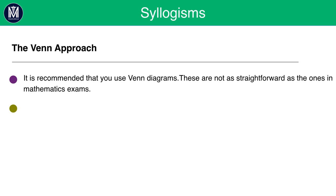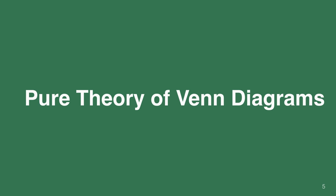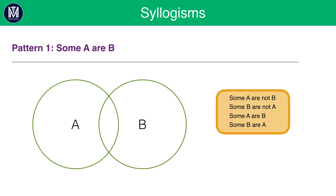It's recommended that you use Venn diagrams. These aren't as straightforward as the ones you use in your maths exams. We will now go through the different types of Venn diagrams and when to use them. The most straightforward pattern in syllogisms is 'some A are B,' where A and B are each a category or noun.